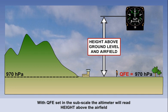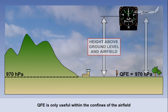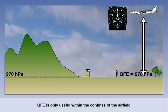If the aircraft was then to climb, the altimeter would show the height above the airfield. This can only be useful within the immediate confines of the airfield.